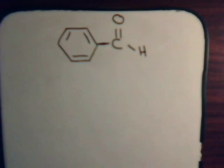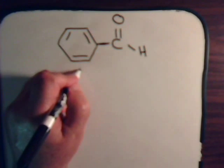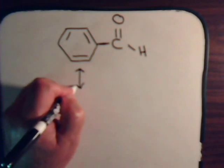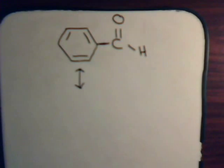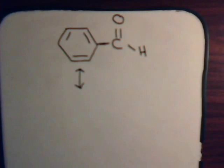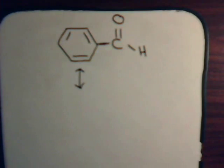To draw different canonical structures, we see that the carbon and the oxygen have a pi bond between them. That means that the carbon has a single electron in its pi orbital, and so does the oxygen. The pi orbitals overlap and we have the pi covalent bond.